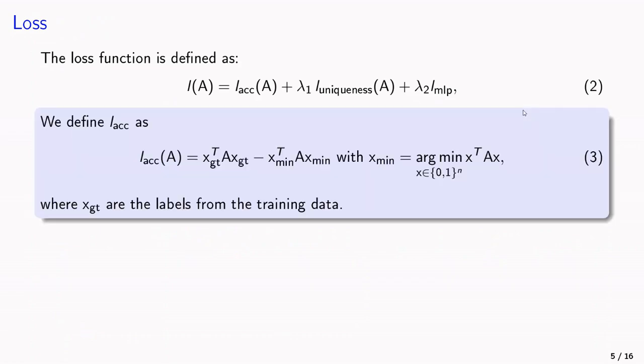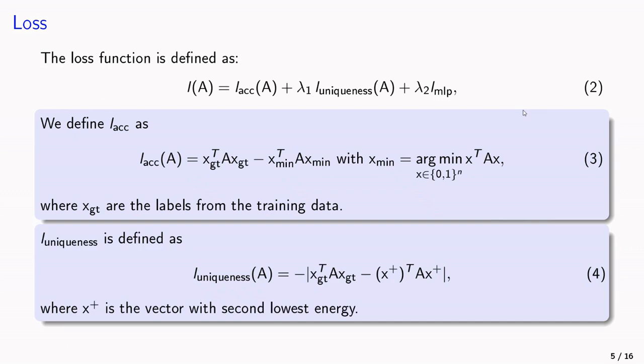The accuracy loss is the difference in energy between the quantum result vector and the vector x_min, which can be obtained from the quantum annealer. The uniqueness loss has some absolute value and looks at the energy difference between the quantum result and the vector corresponding to the second lowest energy.